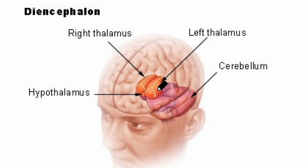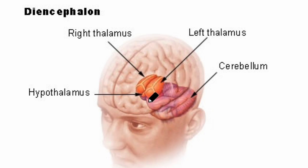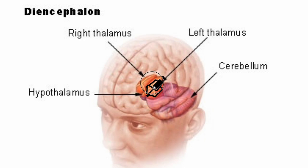Now let's look at its measurements. Anteroposteriorly it is 4 centimeters, vertically it is again 4 centimeters, and transversely it is 4 centimeters in length. It has two ends — an anterior and posterior end — and looking at its surfaces there is a superior surface, an inferior surface, a medial surface, and a lateral surface.